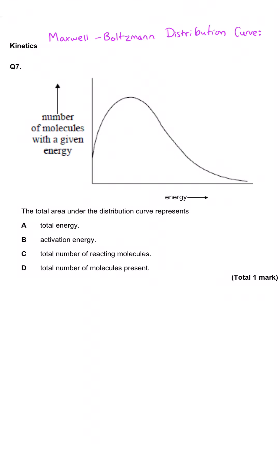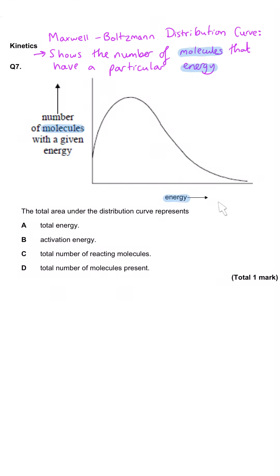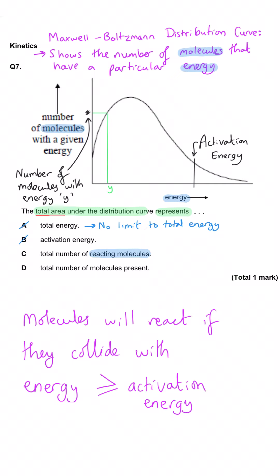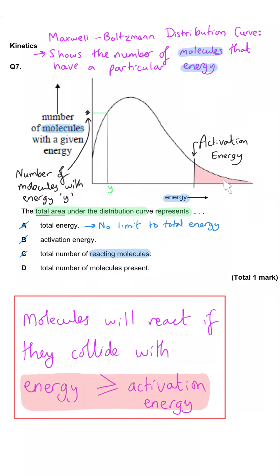Here we have a Maxwell-Boltzmann distribution curve with number of molecules on the y-axis and energy on the x-axis. The question asks what the total area under the distribution curve represents. It is not the total energy. It is not the activation energy — that would be a single point on the x-axis. It is not the total number of reacting molecules — those are only the molecules to the right of the activation energy. The total area under the entire curve represents the total number of molecules present. D is correct.